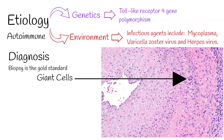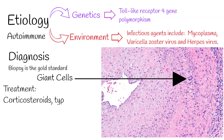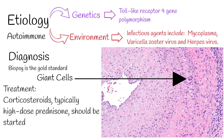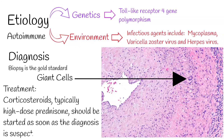Treatment: corticosteroids, typically high-dose prednisone, should be started as soon as the diagnosis is suspected — even before it is confirmed by biopsy — to prevent irreversible blindness secondary to ophthalmic artery occlusion. The dose of corticosteroids is generally slowly tapered over 12 to 18 months.